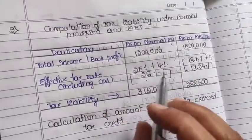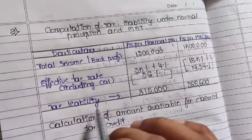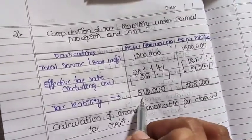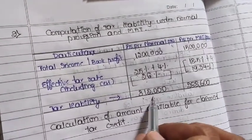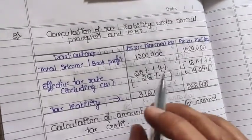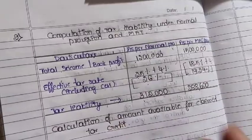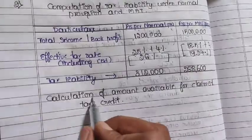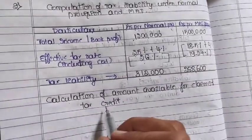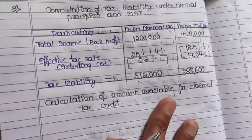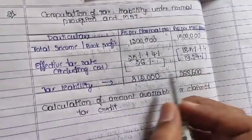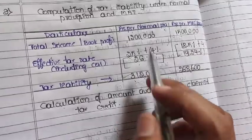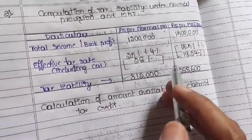For the purpose of computation of tax payable, whichever is higher qualifies. The normal provision gives 3,12,000 and MAT gives 2,88,600 — so the higher amount of 3,12,000 is the qualified tax payable. Now we calculate the amount available for claiming tax credit. The excess of normal provision tax over MAT provision tax is the eligible credit amount.